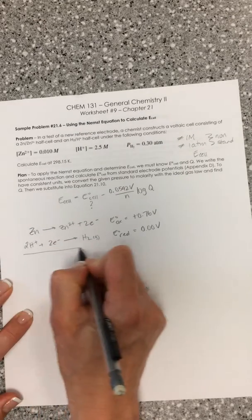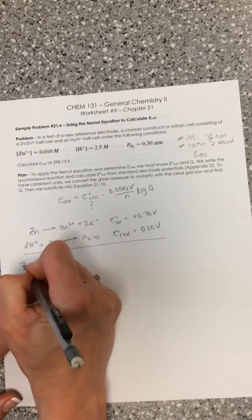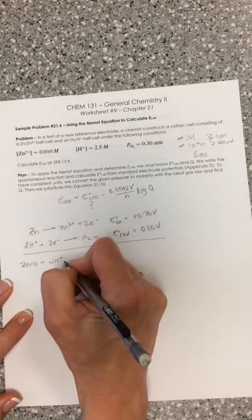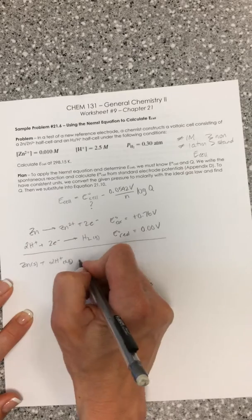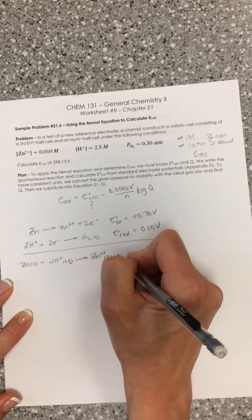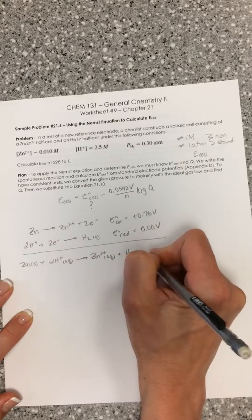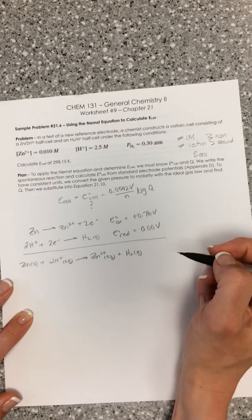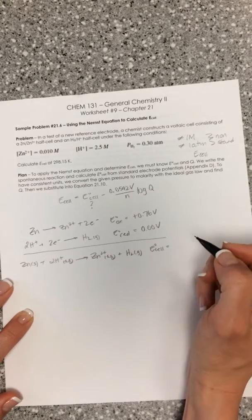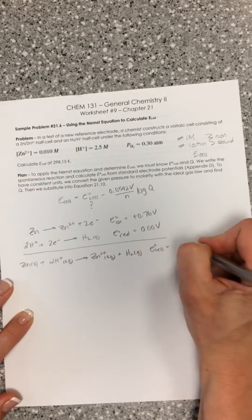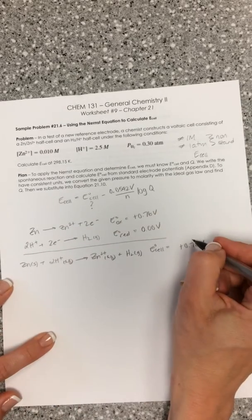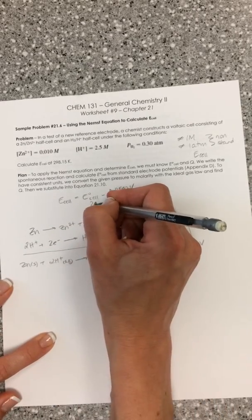Summing up our overall reaction, we get solid zinc in acidic solution plus two protons gives us zinc ions and hydrogen gas. We're going to sum these up and we're going to get E cell under standard conditions equal to positive 0.76 volts. Now we know our E cell.